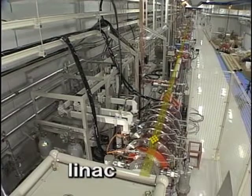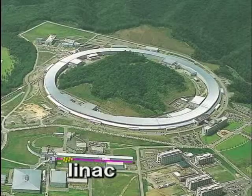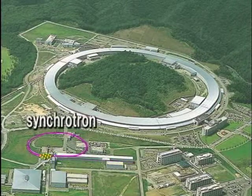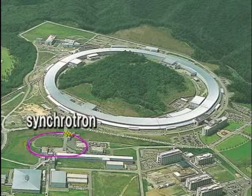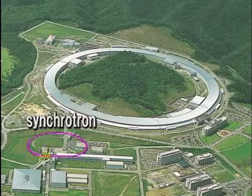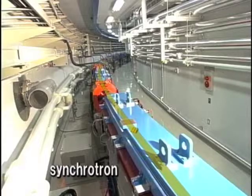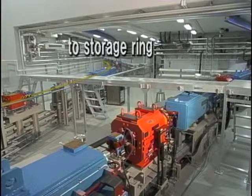At Spring 8, electrons generated by an electron gun are accelerated to 1 GeV by a linear accelerator. Next, the electrons are further accelerated by a circular accelerator, called a synchrotron, to 8 GeV, after which they are injected into a storage ring.